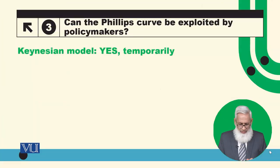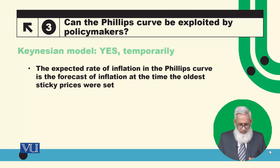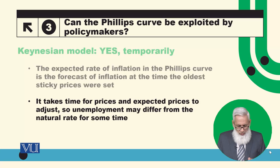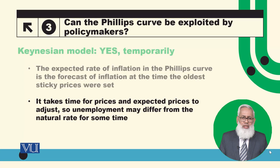What does the Keynesian view say? Yes, exploitation is possible. The expected rate of inflation in the Phillips curve is the forecast of inflation at the time the oldest sticky prices were set. It takes time for prices and expected prices to adjust, so unemployment may differ from the natural rate for some time. In the Keynesian model, prices slowly adjust.